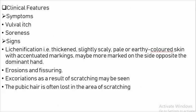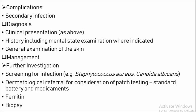Clinical Features — Symptoms: Vulval itch and soreness. Signs: Lichenification. Excoriation as a result of scratching may be seen. The pubic hair is often lost in the area of scratching. Complications: Secondary infection. Diagnosis: Clinical presentation, history, and general examination of skin. Management — Investigation: Screening for infection, for example Staphylococcus aureus and Candida albicans. Dermatological referral for consideration of patch testing. Biopsy if required.